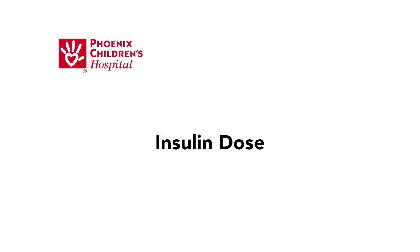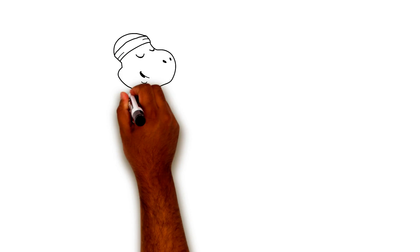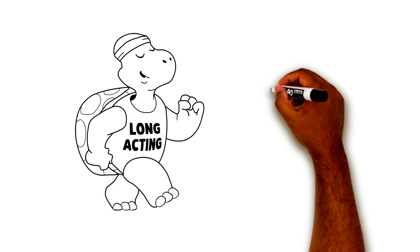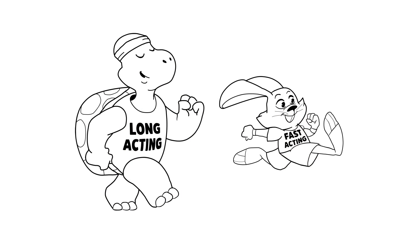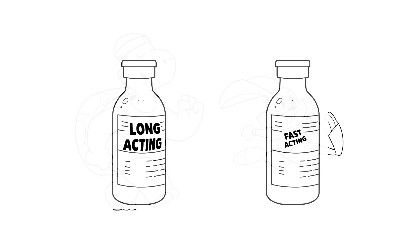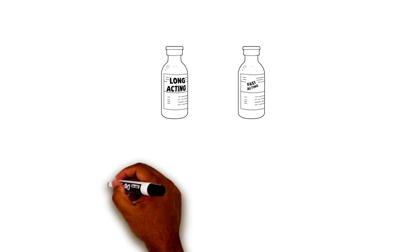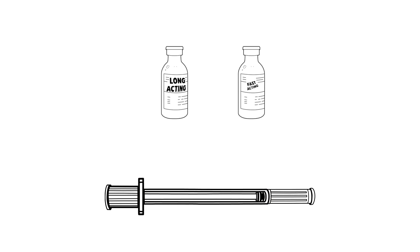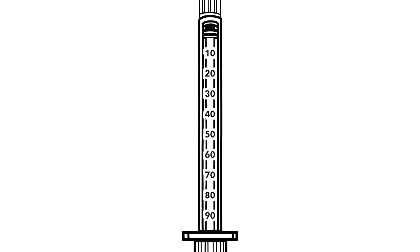This video explains the amount of insulin your child needs with each injection. There are two types of insulin: long-acting insulin and fast-acting insulin. Both types come in a glass bottle called a vial and are injected using a syringe. Insulin is measured in units, and you will see the unit numbers on the specific syringe that matches your insulin. This helps you draw up the right amount of insulin each time.